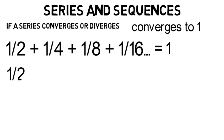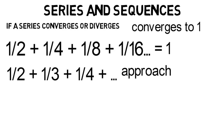But if you have the series one-half plus one-third plus one-fourth and so on, it would not converge. It would just get bigger and bigger and approach infinity, meaning it diverges.